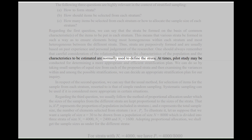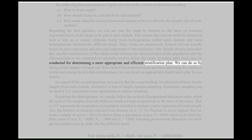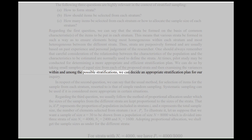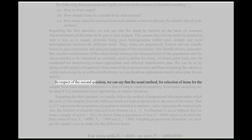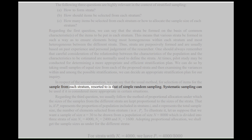One should always remember that careful consideration of the relationship between the characteristics of the population and the characteristics to be estimated are normally used to define the strata. At times, a pilot study may be conducted for determining a more appropriate and efficient stratification plan by taking small samples of equal size from each of the proposed strata and examining the variances within and among possible stratifications. In respect of the second question, the usual method for selection of items from each stratum is that of simple random sampling, though systematic sampling can be used if considered more appropriate.